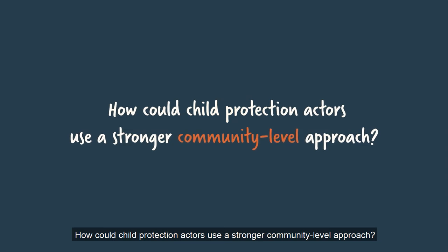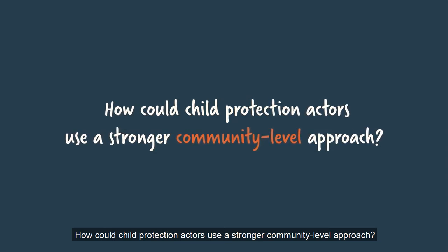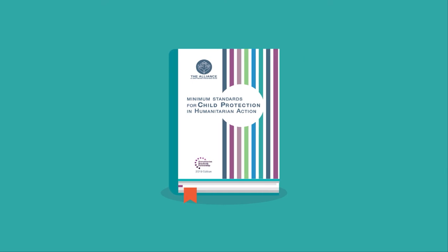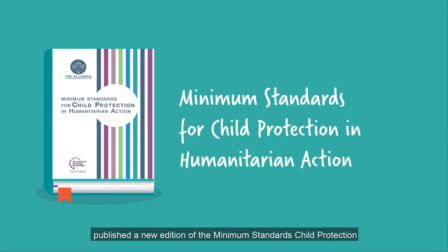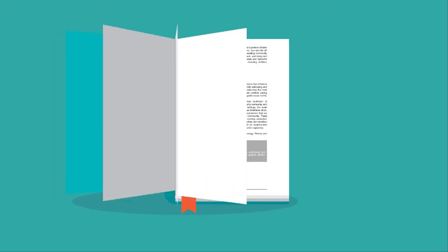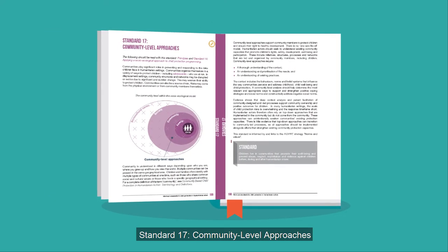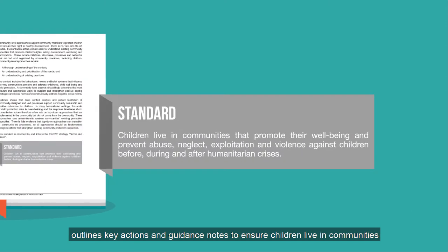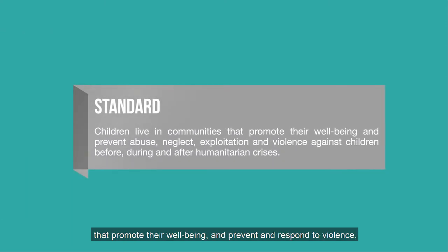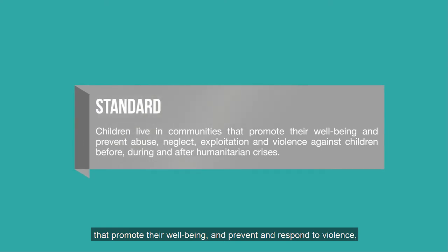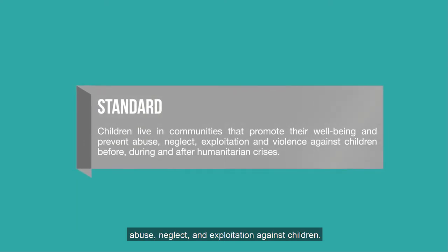How could child protection actors use a stronger community-level approach? In 2019, the Alliance for Child Protection in Humanitarian Action published a new edition of the Minimum Standards for Child Protection. Standard 17, Community-Level Approaches, outlines key actions and guidance notes to ensure children live in communities that promote their well-being and prevent and respond to violence, abuse, neglect and exploitation against children.